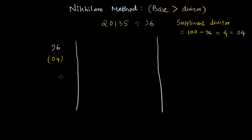Note that why we are writing 04. This is a very important point here because the way we write the supplement divisor impacts how we get the result and it's important to get the accurate result.